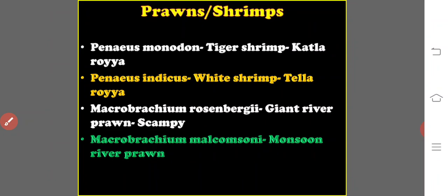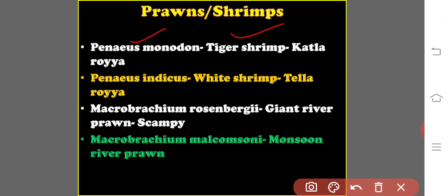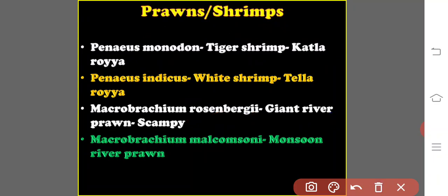Then, prawns or shrimps — shrimps are generally prawns cultivated in oceans or marine waters. Penaeus monodon is commonly called the tiger shrimp (vernacular name: catlaroia). Penaeus indicus is the white shrimp (vernacular name: tellaroia). Macrobrachium rosenbergii is commonly called the giant river prawn, also known as scampi. Finally, Macrobrachium malcolmsonii is known as the monsoon river prawn.